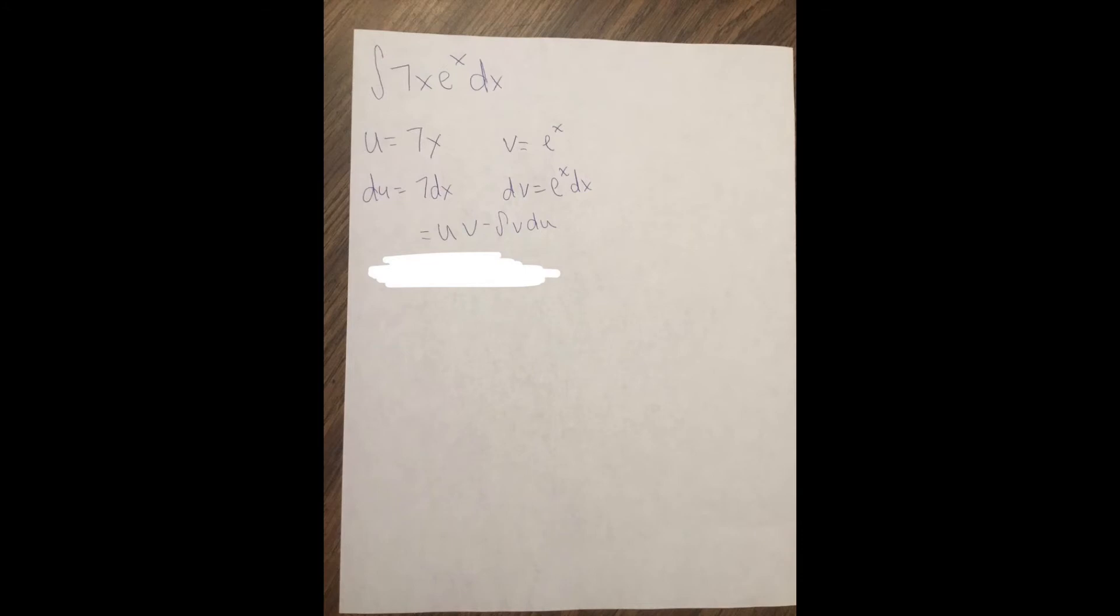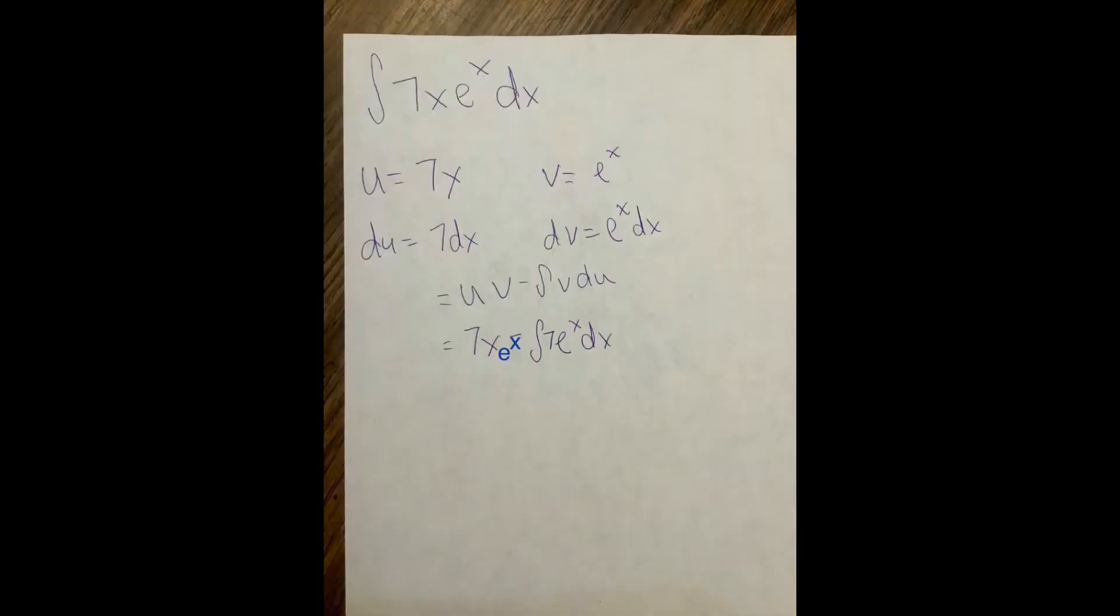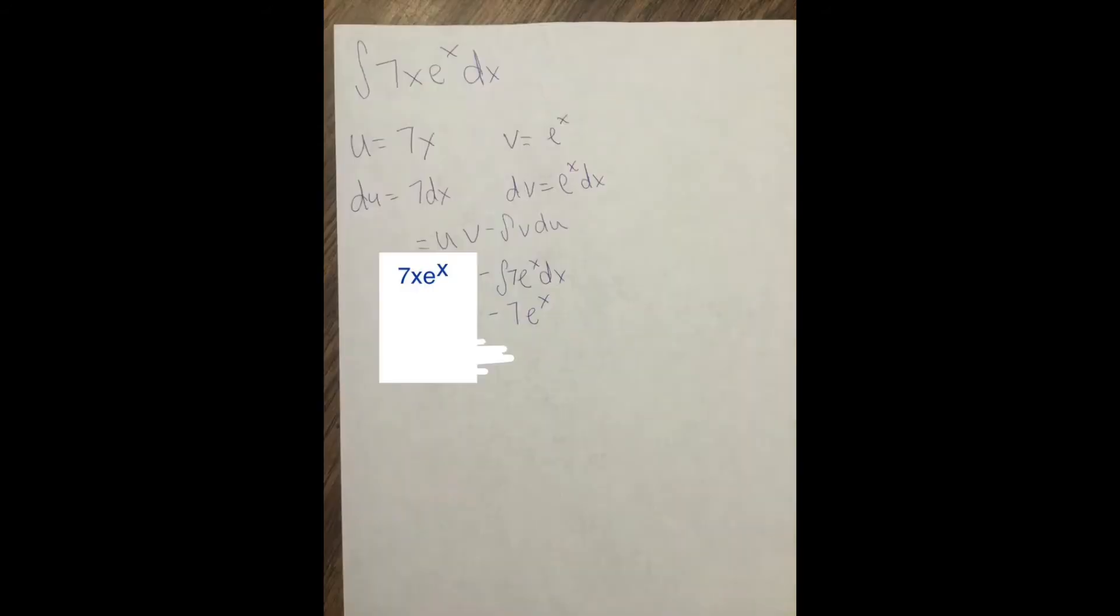So we plug everything in, and then we have minus integral of v du, so we do the antiderivative, and then we make sure we have u, v, and then our simplified next part as the whole answer.